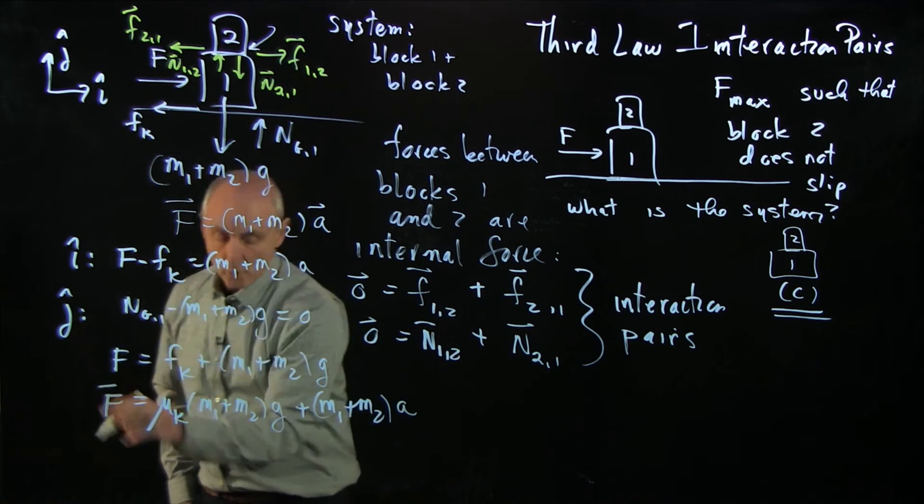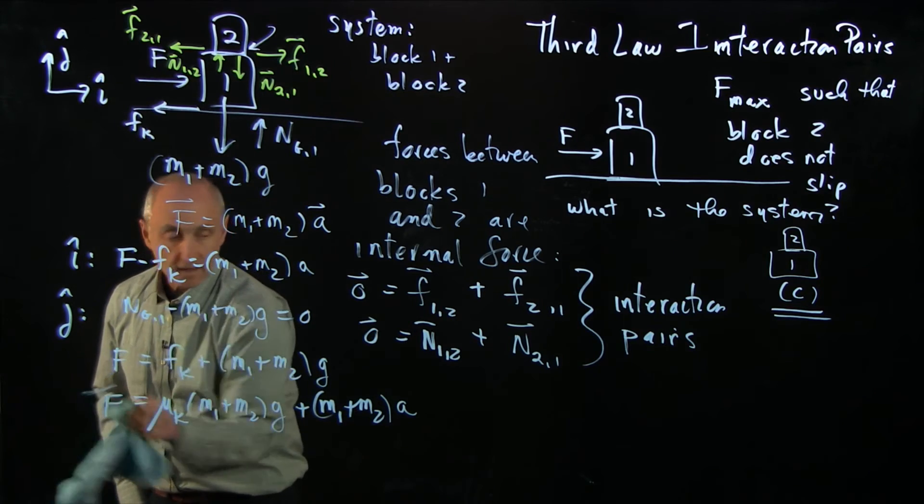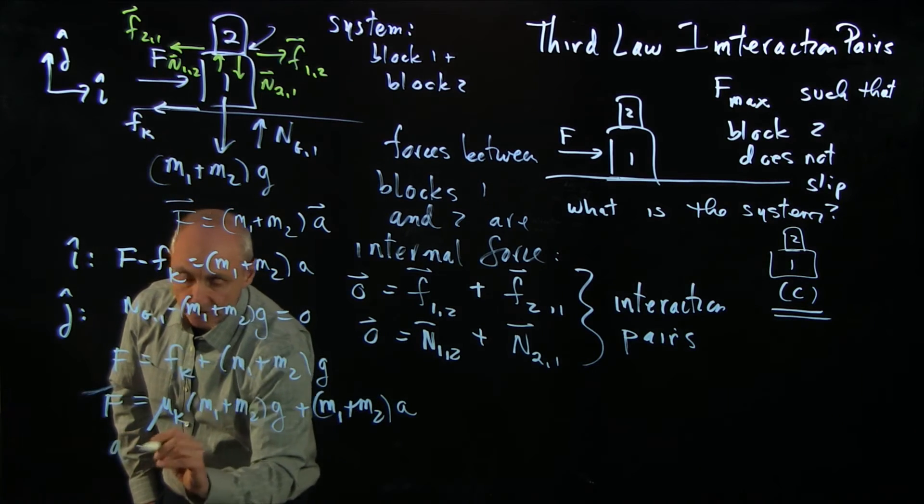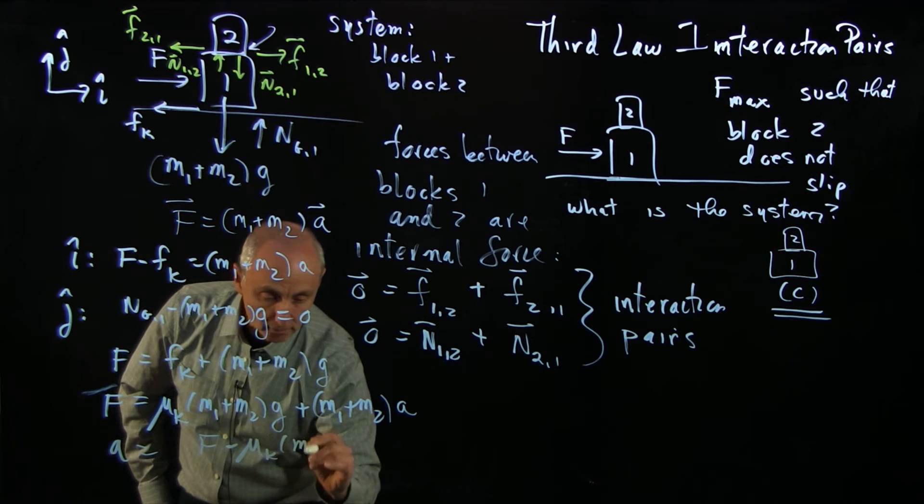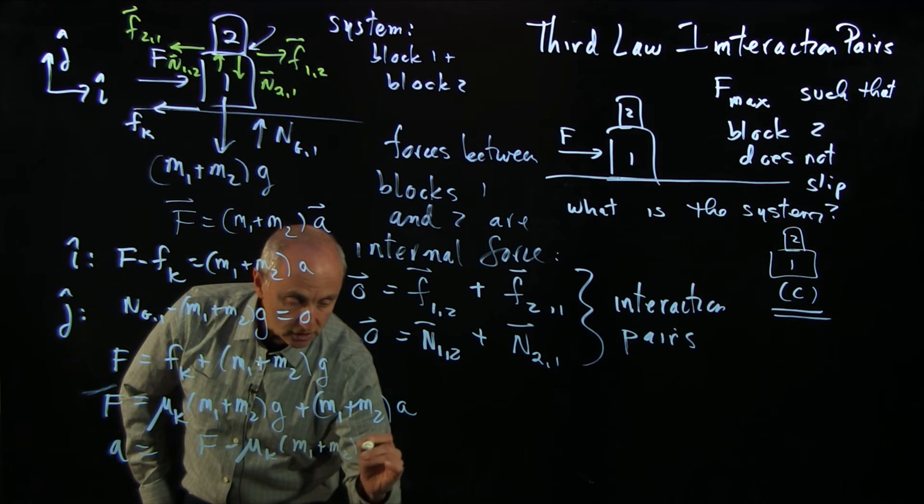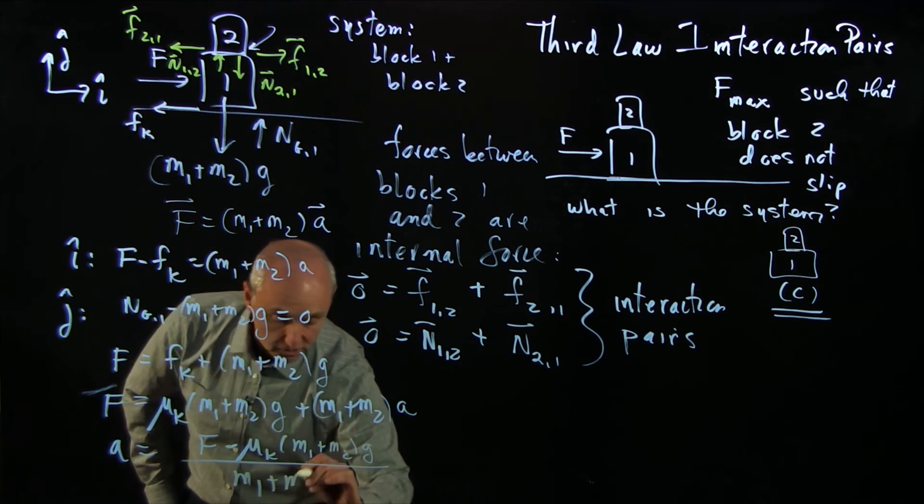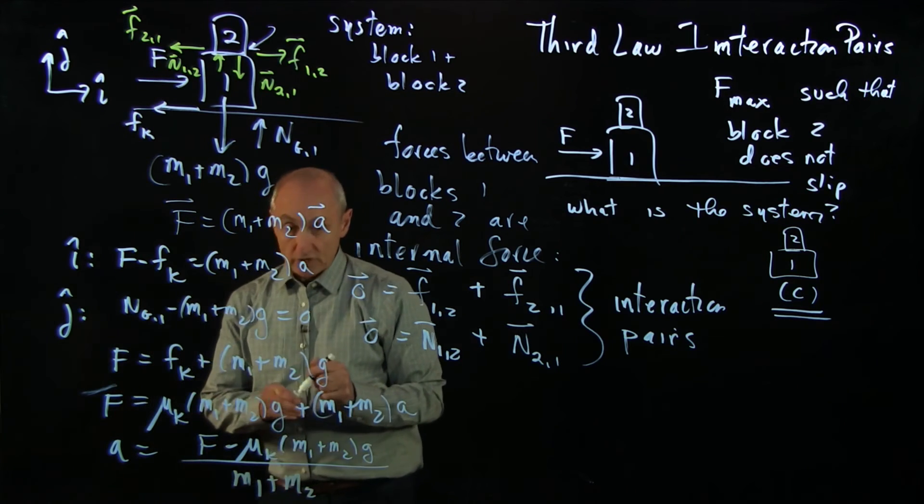So we have the acceleration of the system depends on the force. That's mu k M1 plus M2 g divided by M1 plus M2. But notice,